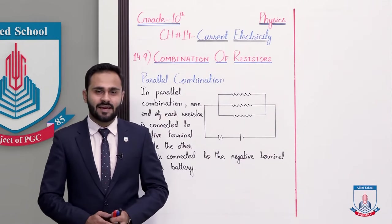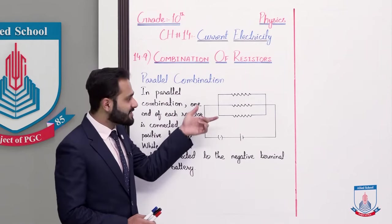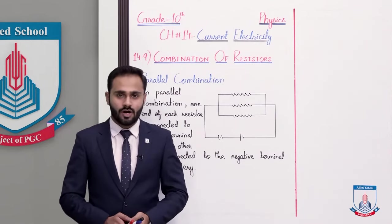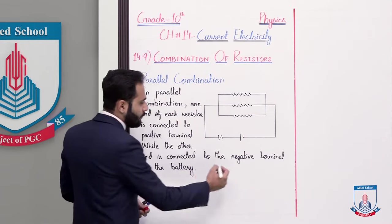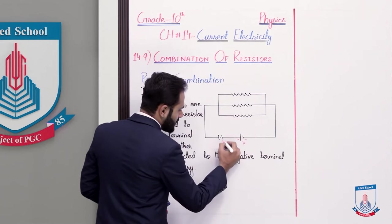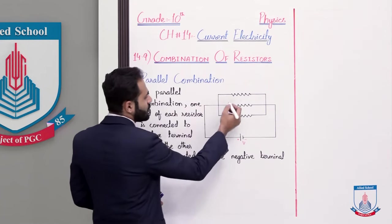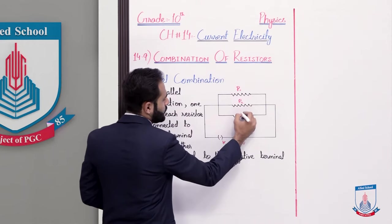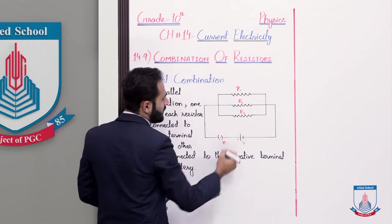Jaise ka aap dekh sakte hain yahaan par resistors hain wo parallel attached hain aur ye further connected hain ek battery ke saath. So battery ke let's suppose ki V voltage hai aur yahaan par ek switch hai represented by K aur in resistors ko represent kar dete hain: this is R1 resistor, R2 and similarly this is R3.